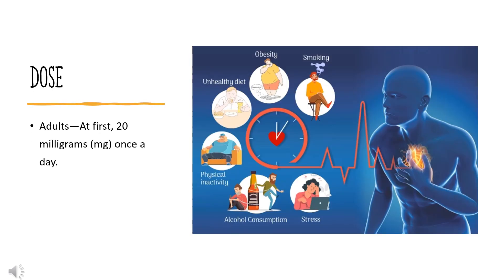The dose of this medicine will be different for different patients. For oral dosage form tablets, for high blood pressure: adults should take 20 mg once a day at first. Your doctor may increase your dose as needed; however, the dose is usually not more than 40 mg once a day.